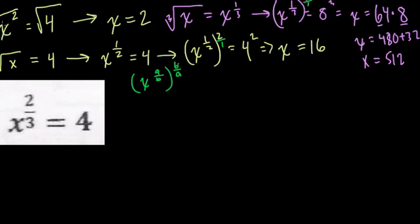It even goes back to the simple example. If we start with x squared, we multiply that by the 1 half, so then we have 4 to the 1 half, which is 2. So you always multiply by the reciprocal to solve for x.